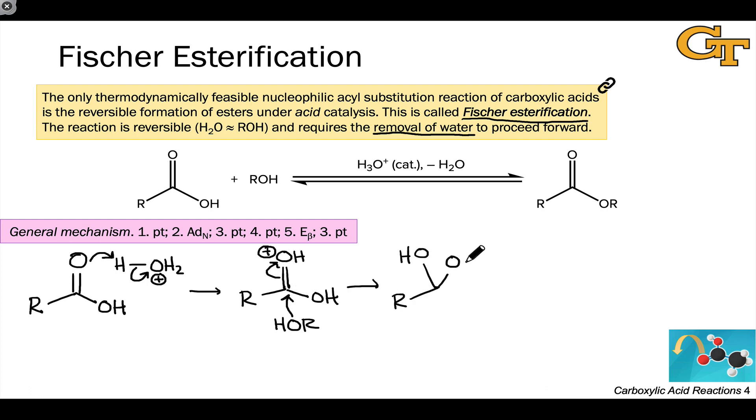This gives a tetrahedral intermediate in which the alcohol has formed a bond to the carbonyl carbon, and we still have the two OH groups in the original protonated carboxylic acid intermediate. There are a couple of proton transfers.